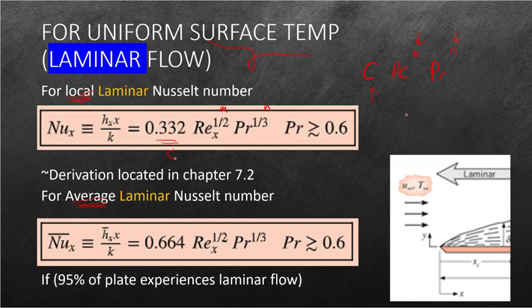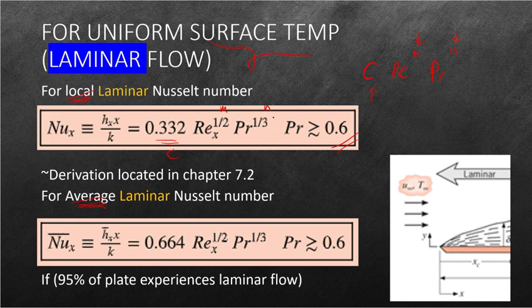And this is only applicable for fluids with a Prandtl number of 0.6 or higher. If we were to use this on a fluid with a lower Prandtl number, the values would be greatly obscured from what we would actually get in experiments versus the computation that would result from this equation.